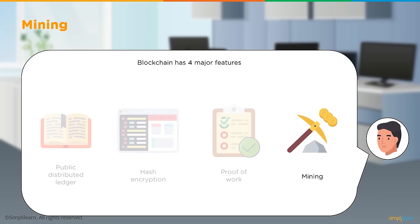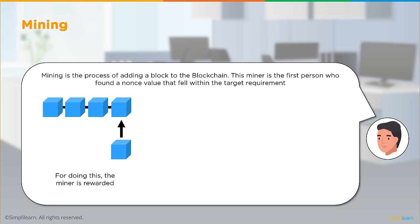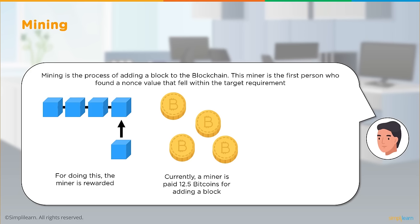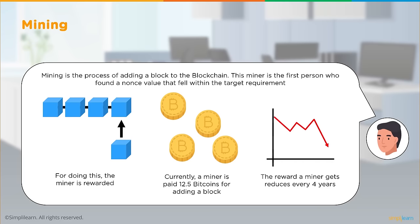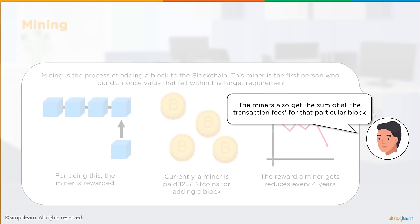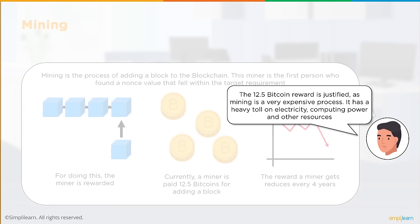Mining is the process of adding a block to the blockchain. The first miner to find a nonce value within the target requirement gets rewarded. As of today, a miner is paid 12.5 bitcoins for adding a block to the blockchain, but this reward halves every four years — reducing to 6.25 bitcoins at the next threshold. Miners also receive the sum of all transaction fees for that block. Mining is a very expensive process, taking a heavy toll on electricity, computing power, and other resources.